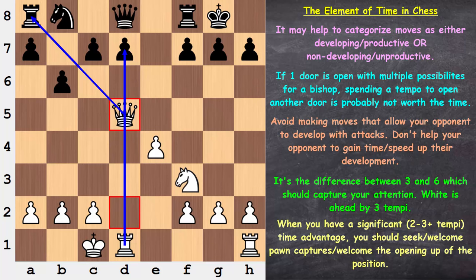Let's look at the flip side. Should it be the case where you're down time-wise, are you going to welcome having the position open up? No. If a decision comes about where you can make a pawn capture or advance to close the position, maybe you should be looking to close the position if you're down time-wise. It works both ways: if you have a time advantage, open the position; if you're down time-wise, you probably want to keep the position closed.